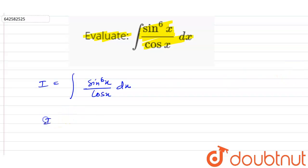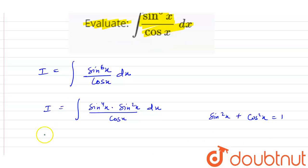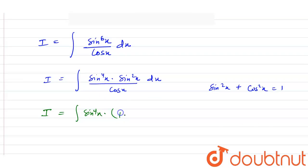This can also be written as I equals the integral of sin⁴x times sin²x divided by cos x dx. We know that sin²x + cos²x = 1, so we can write sin²x as 1 − cos²x. Therefore I equals the integral of sin⁴x times (1 − cos²x) divided by cos x dx.